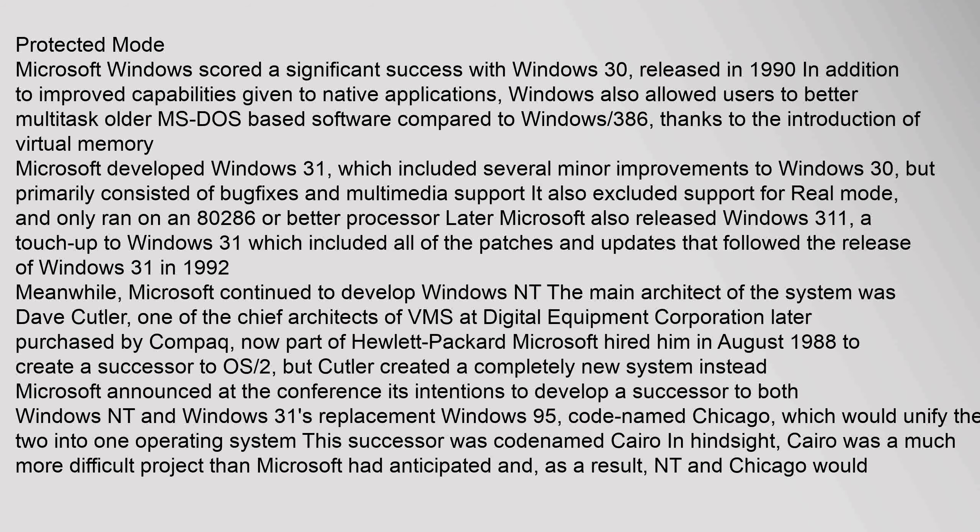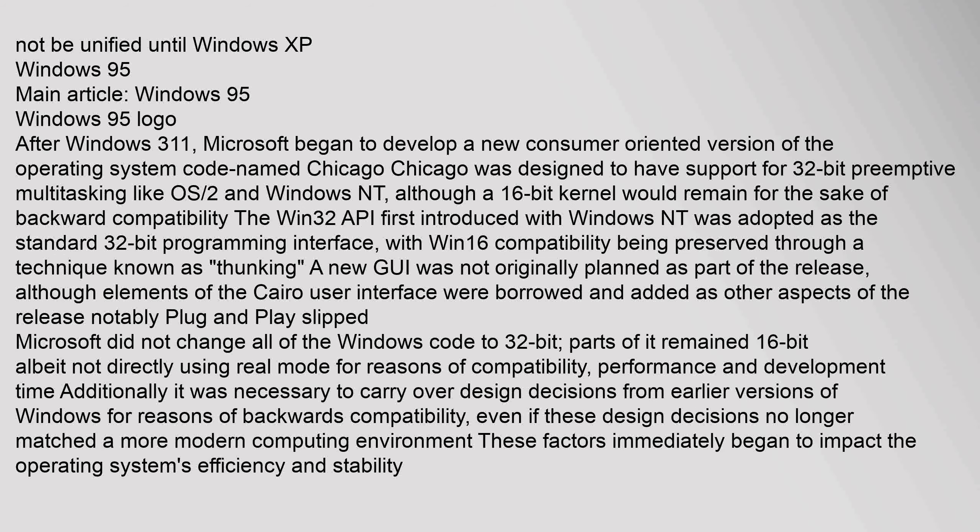Meanwhile, Microsoft continued to develop Windows NT. The main architect of the system was Dave Cutler, one of the chief architects of VMS at Digital Equipment Corporation, later purchased by Compaq, now part of Hewlett-Packard. Microsoft hired him in August 1988 to create a successor to OS/2, but Cutler created a completely new system. Microsoft announced its intentions to develop a successor to both Windows NT and Windows 3.1's replacement, Windows 95, code-named Chicago, which would unify the two into one operating system. This successor was codenamed Cairo. In hindsight, Cairo was a much more difficult project than Microsoft had anticipated, and as a result, NT and Chicago would not be unified until Windows XP.